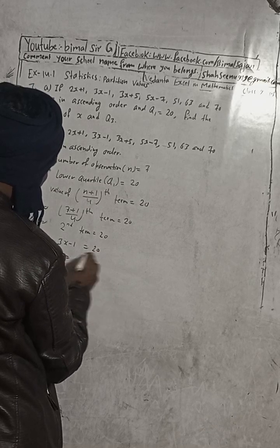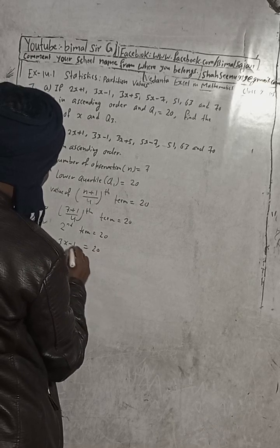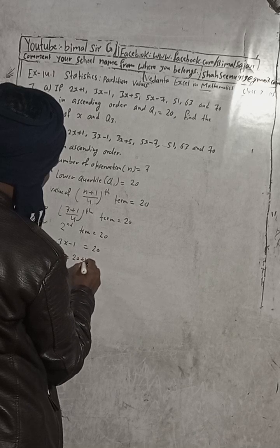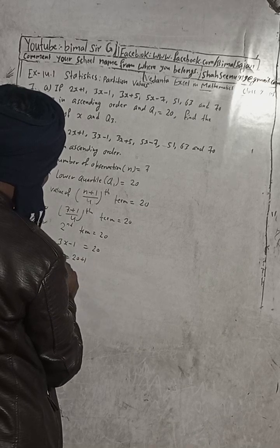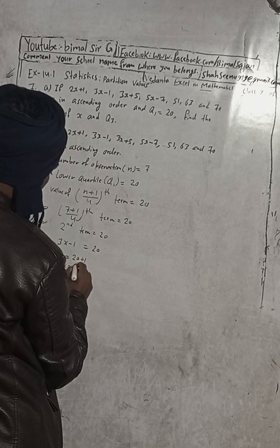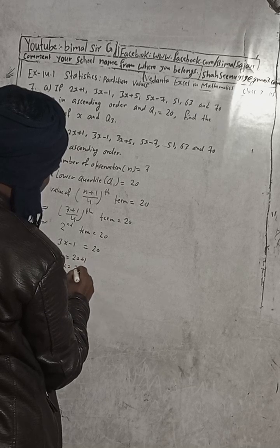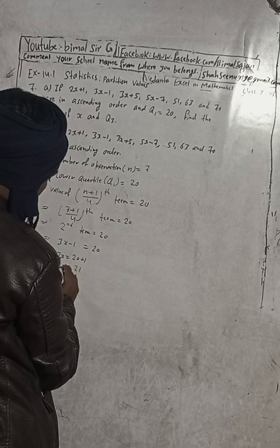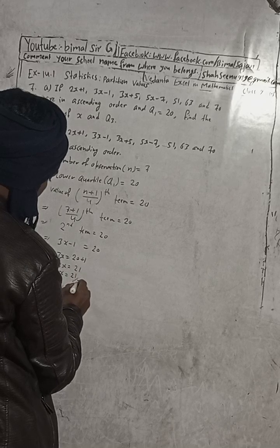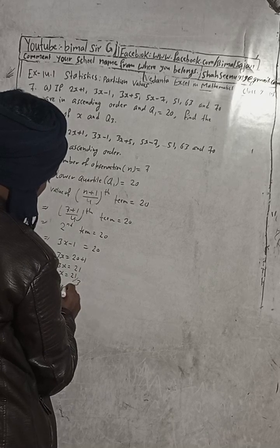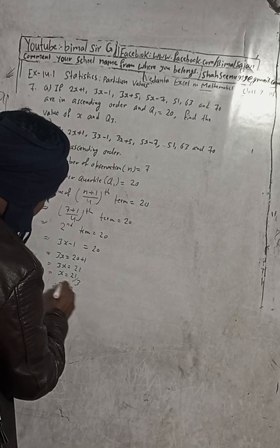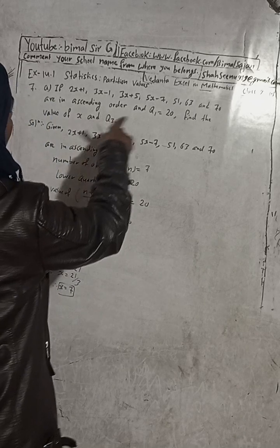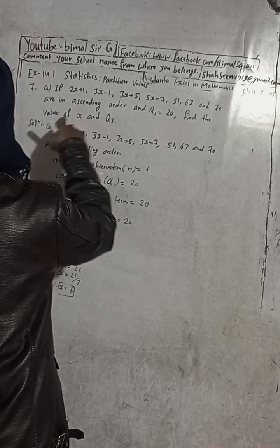The second term 3x-1 is equal to 20. Solving: 3x equals 20 plus 1, so 3x equals 21, and therefore x equals 21 divided by 3. So x equals 7. We have found the value of x.